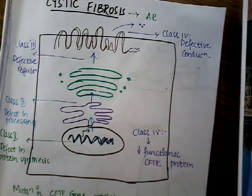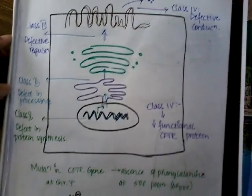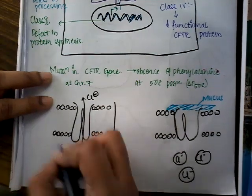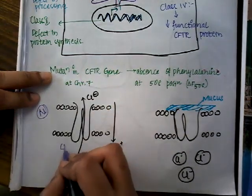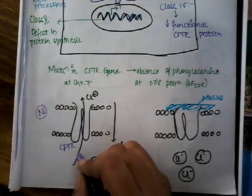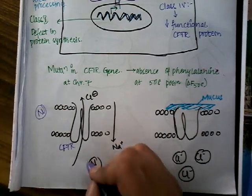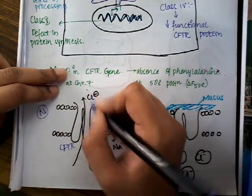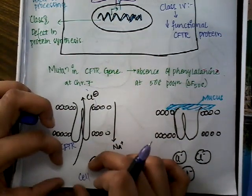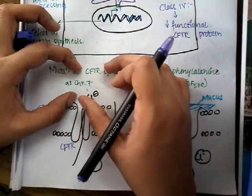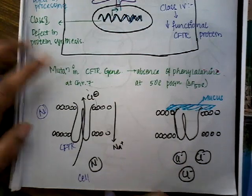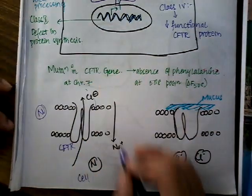Normally, the CFTR transmembrane regulator protein secretes chloride ions from the cell to the outside. It secretes the chloride ion and absorbs the sodium ion, so it helps in the secretion of chloride and the absorption of sodium.